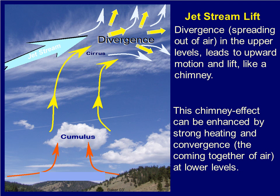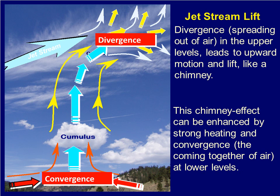Divergence aloft — the spreading out of air in the upper levels — creates a chimney effect where air leaving the top of the column leads to upward motion in the column. So you have divergence aloft and convergence at the base near the surface. This chimney effect can be enhanced by strong heating and convergence of air at the lower levels, which can occur due to surface heating or some other convergence feature at the surface.